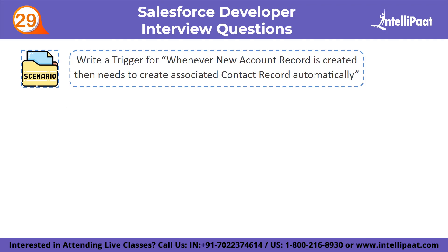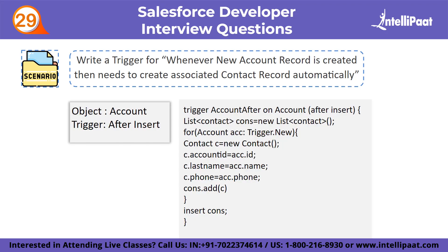Next question: write a trigger for whenever a new account record is created, then automatically create an associated contact record. We take account as the object and after insert as the type of trigger. We create a trigger named account after with the type after insert. Next, we take a list of contacts and apply a for loop on the account object to trigger the contact object. We create a new object for contact and use the instance of the new object to compare account ID, name, and phone between the account and contact objects. We use insert to add the data into the contact object.